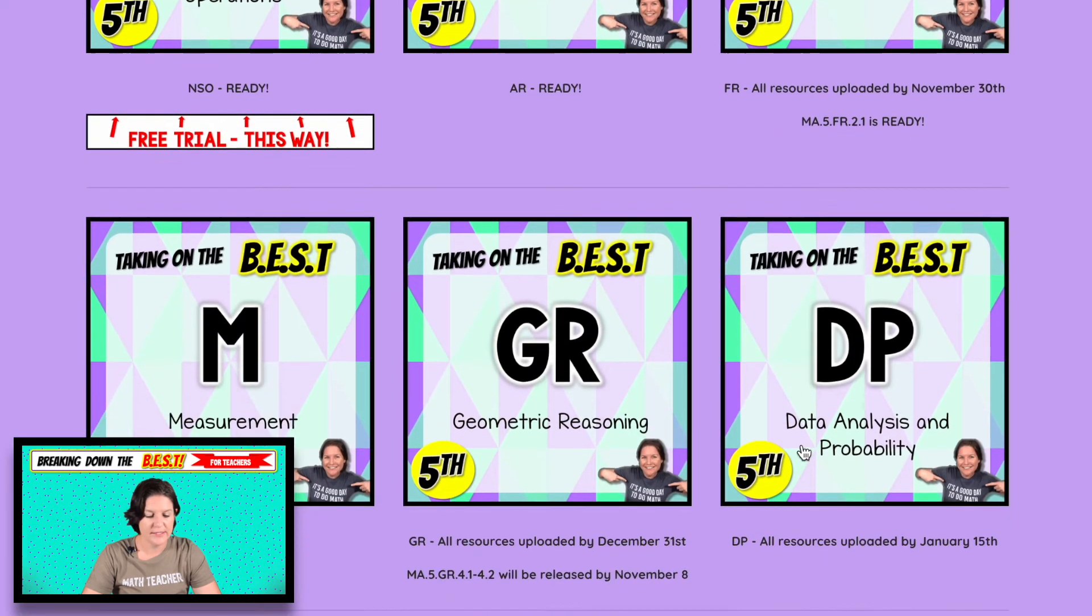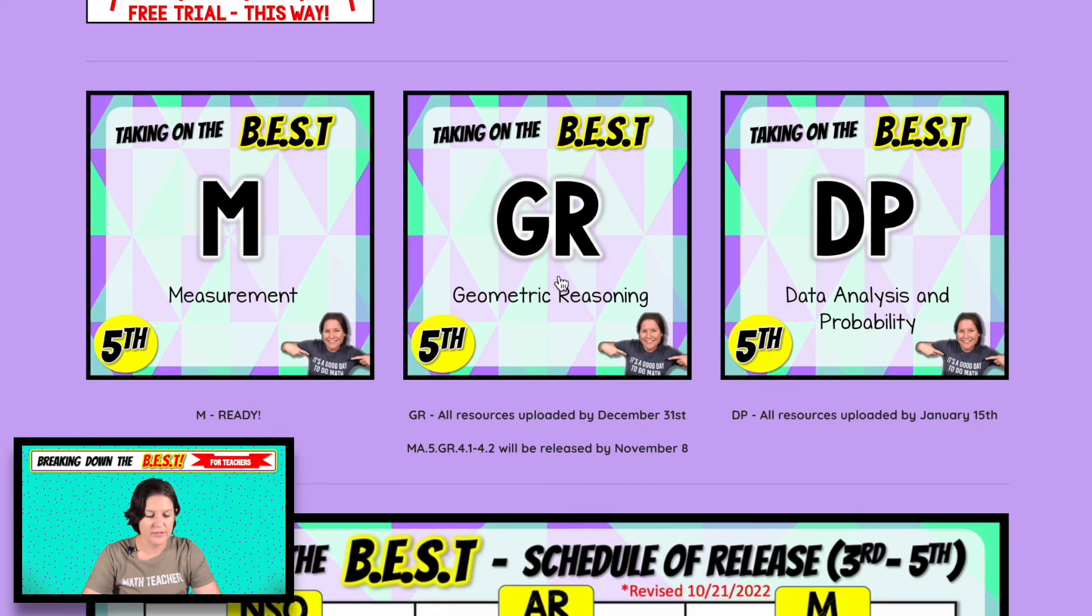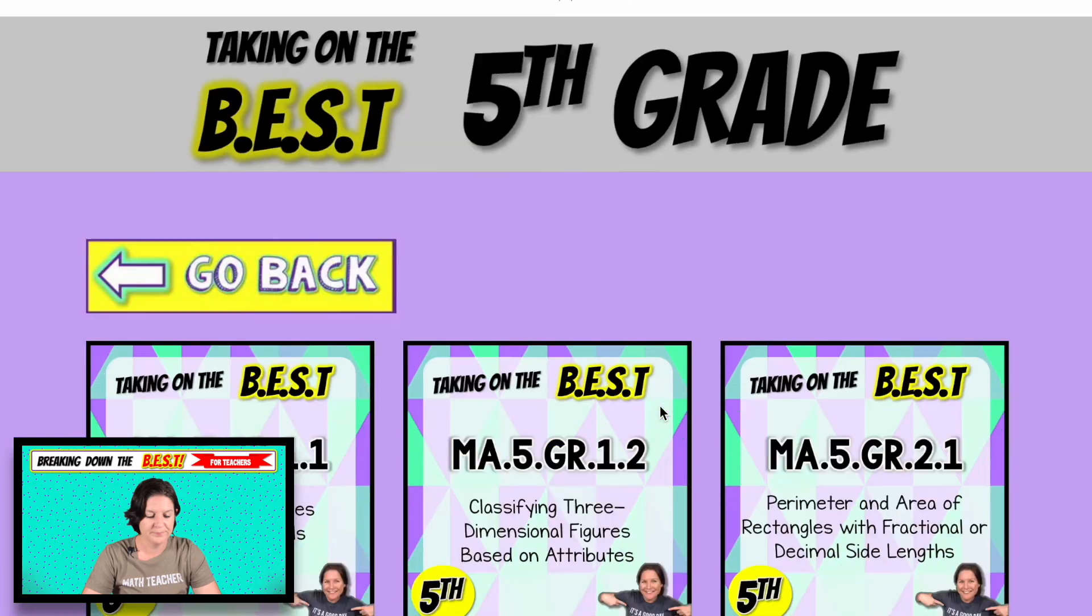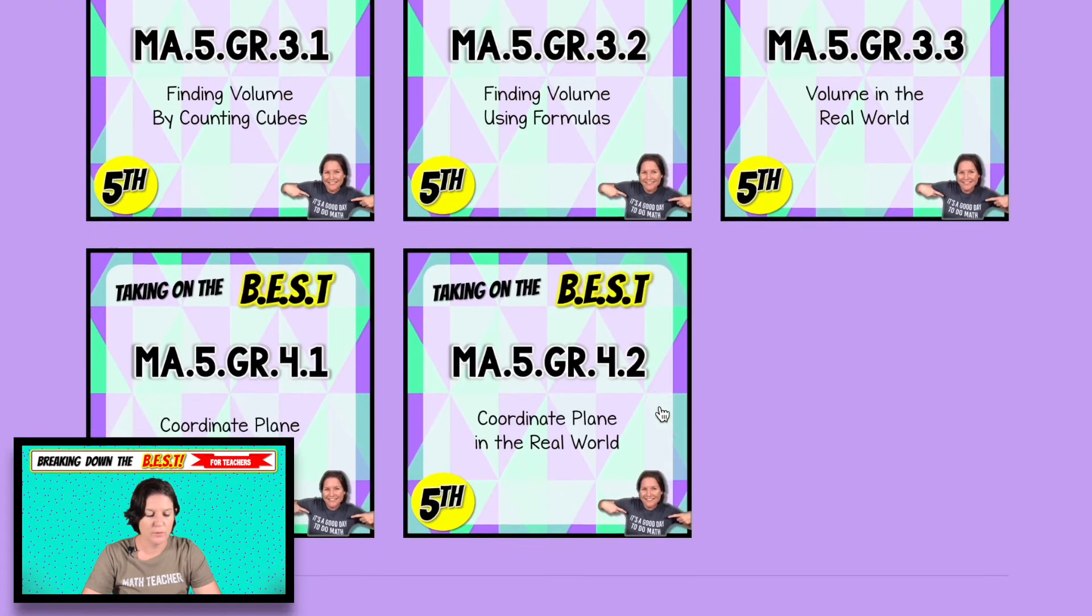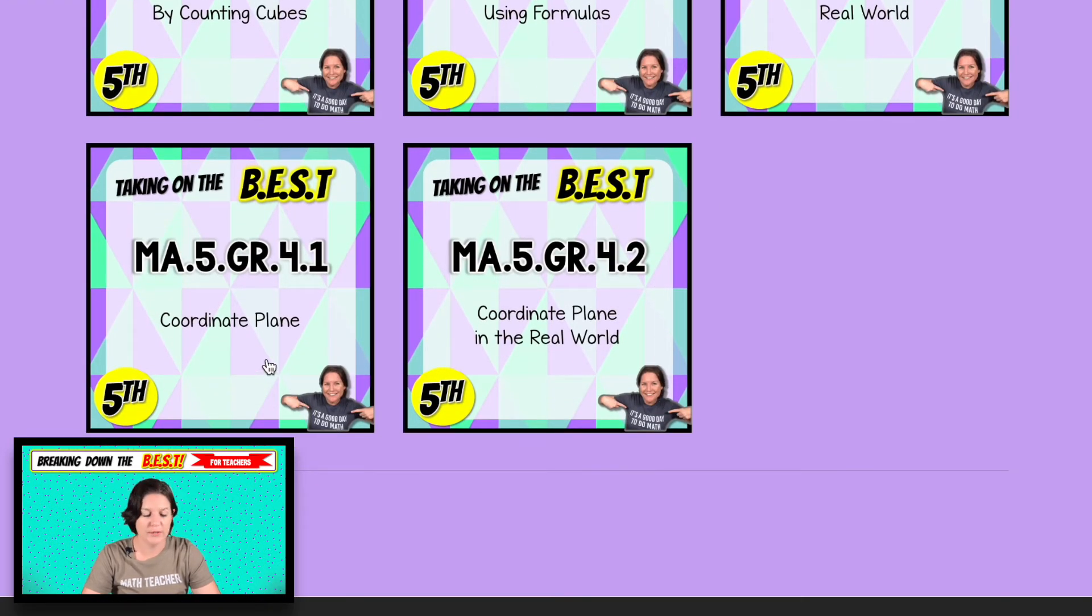The strand is in the GR strand right here. And we're scrolling down to 4.1, which is the coordinate plane. As you can see 4.2. Was that listed? That's weird. I'm looking back at the vertical alignment.